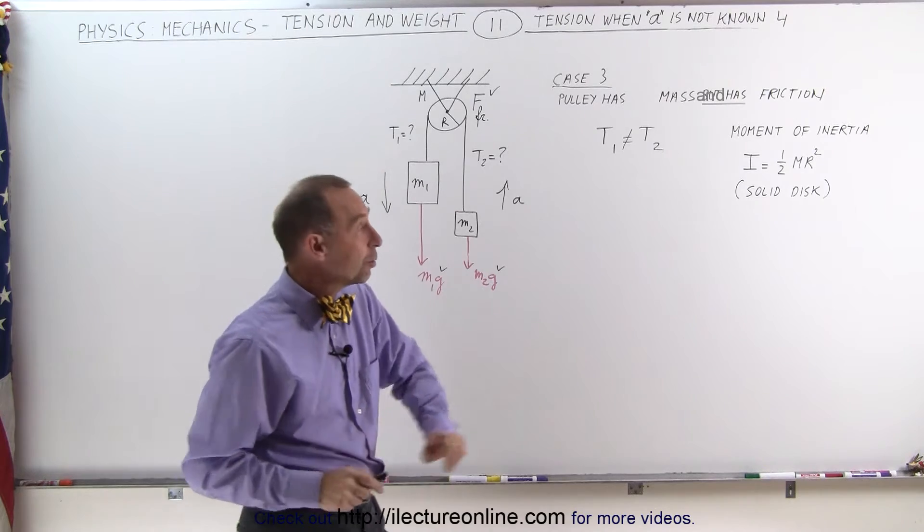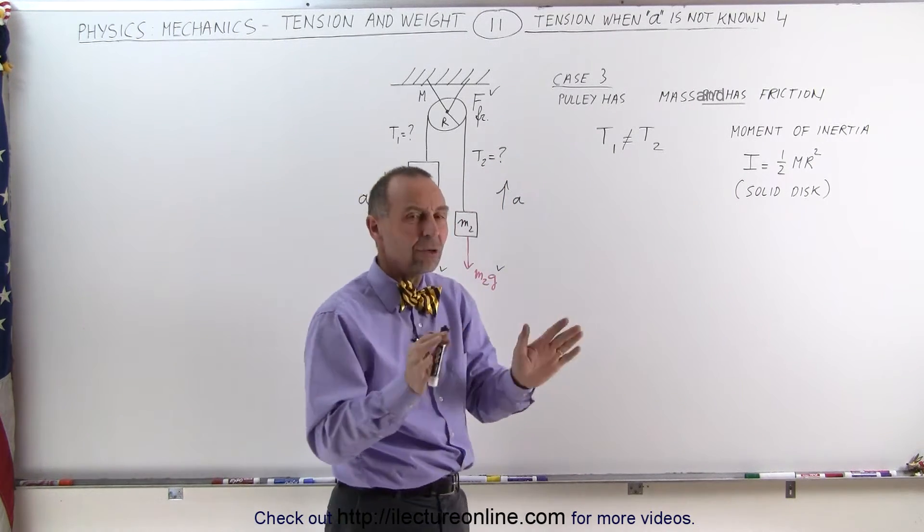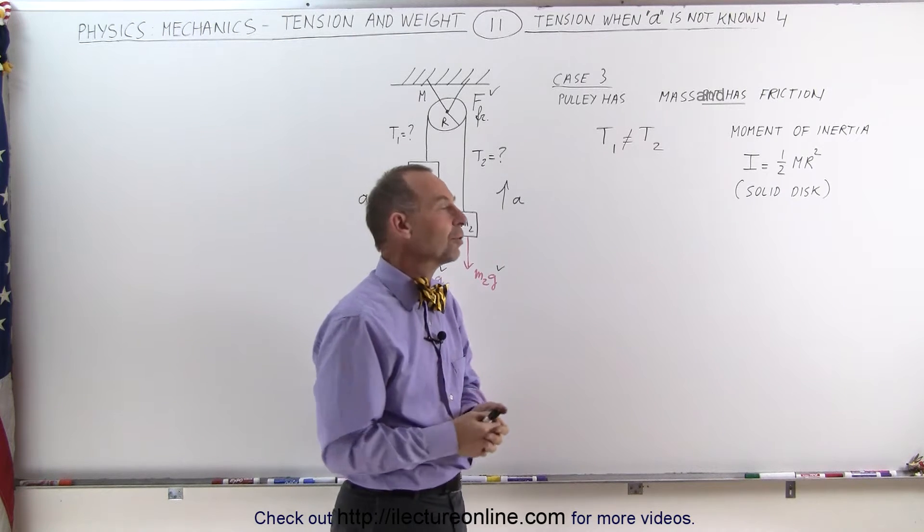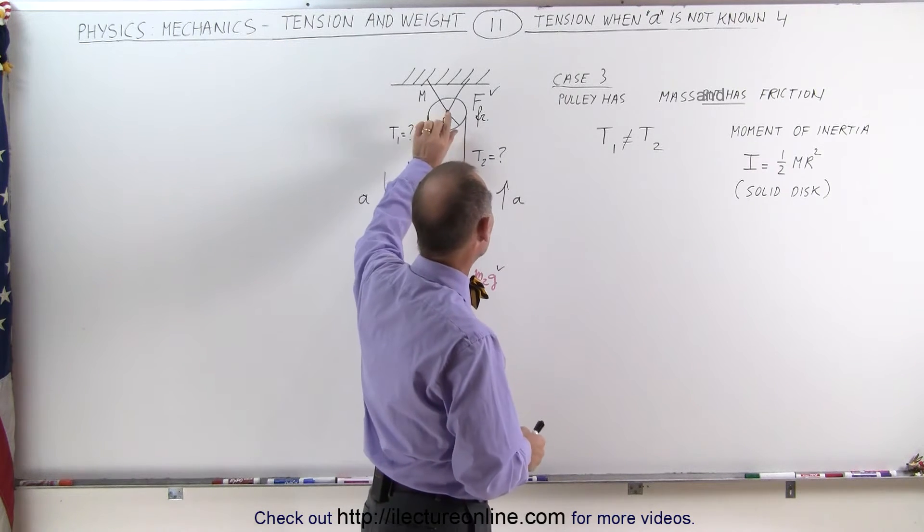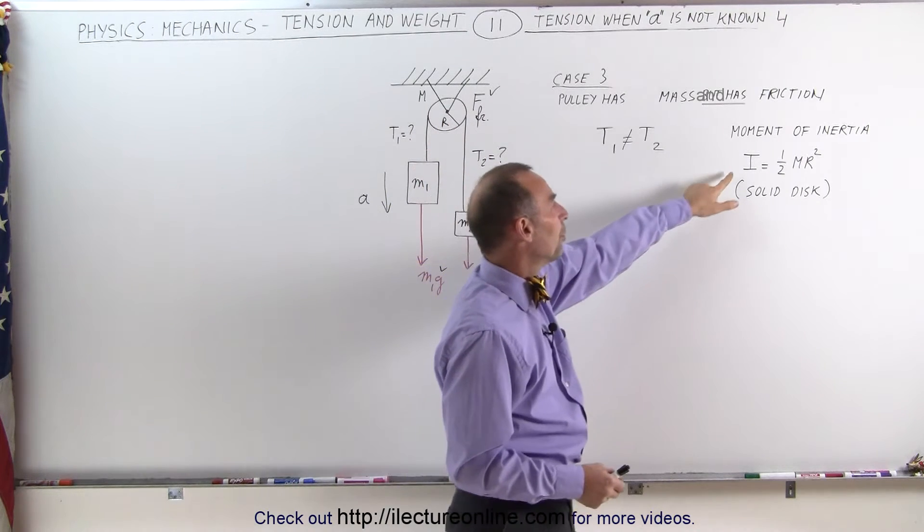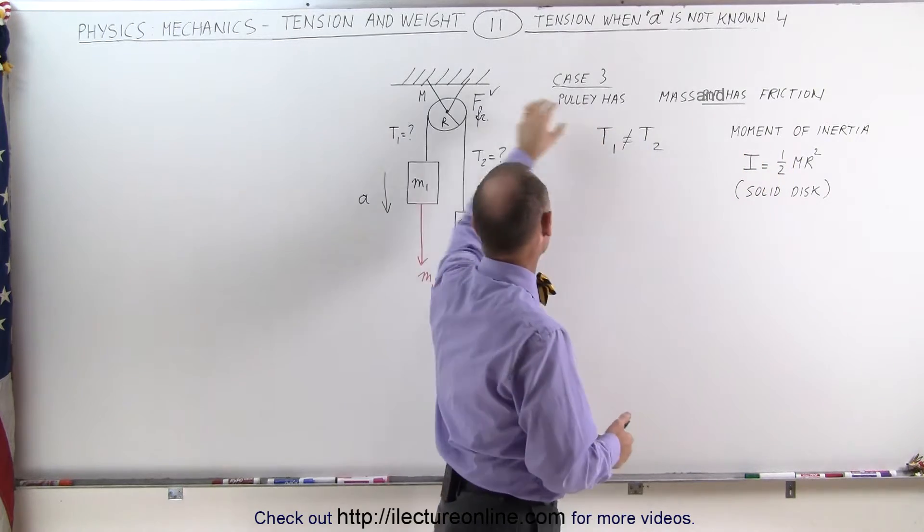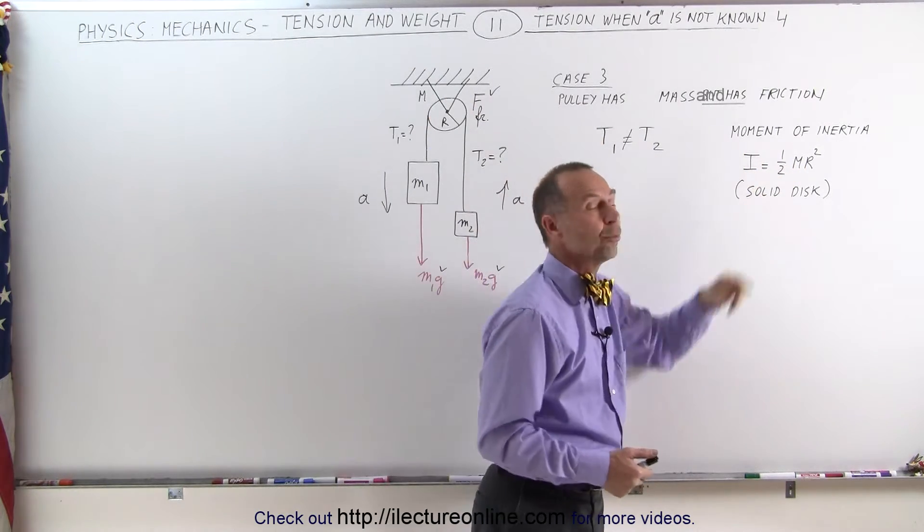We also have to take into account the moment of inertia, and at this point you may not know yet what that is, but that's okay. We'll show you a general approach on how to use it. For a solid disk, assuming that the pulley is a solid disk, the moment of inertia, which is indicated by the letter I, is one-half the mass of the pulley times the radius squared.